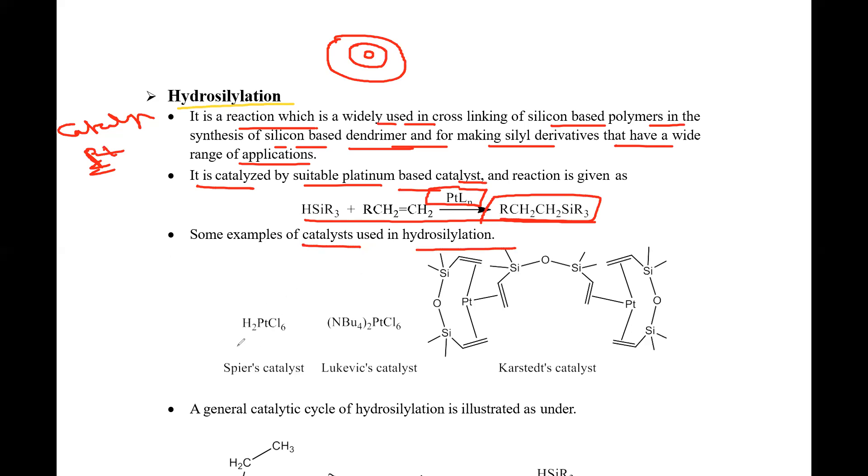This is Spier's catalyst, which is H2PtCl6. Then dibutyl nitro-platinum-chloride, Luker's catalyst, and Karstedt's catalyst. The structure is sometimes asked in examination.